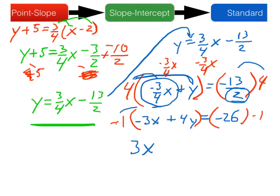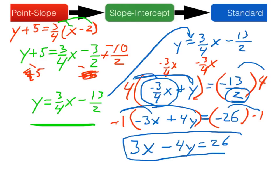So negative one times negative three x is positive three x. Negative one times positive four y is negative four y. And then negative twenty-six times negative one is positive twenty-six. So there we go, our final answer: three x minus four y is equal to twenty-six.